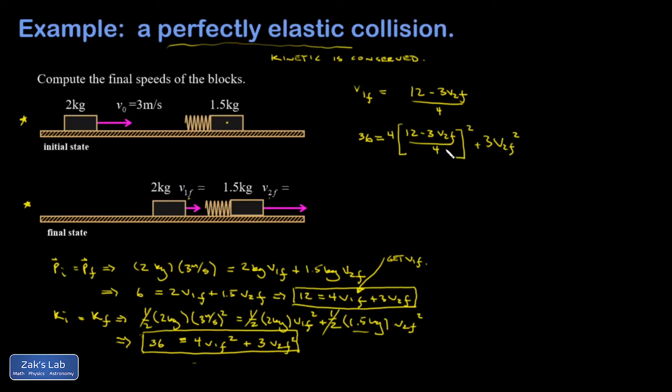Why don't we plan to cancel one of those, and then I'm going to multiply both sides of the equation by four to get rid of the remaining four. So that gets me a 144 on the left hand side and a 12 minus 3v2 final all squared plus a 12v2 final squared.